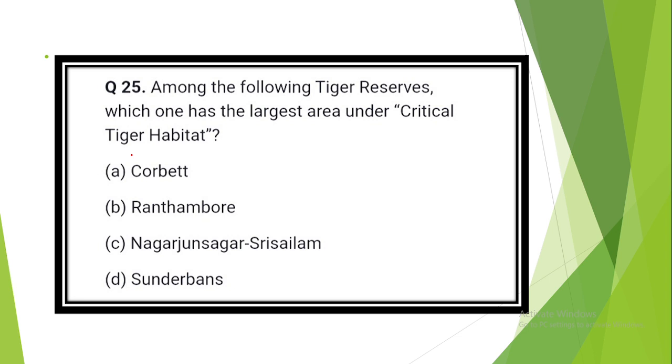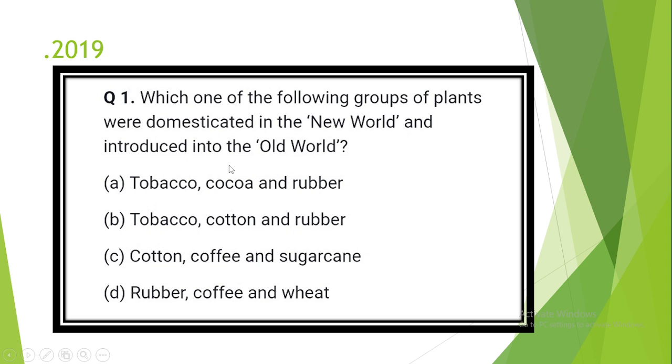Question number 25 and last question. Among the following tiger reserves, which one has the largest area under critical tiger habitat? The answer is option C: Nagarjuna Sagar Srisailam in Andhra Pradesh. Next is 2019 UPSC preliminary questions related to environment. Question number 1. Which one of the following groups of plants were domesticated in the new world and introduced into the old world? Option A: Tobacco, cocoa and rubber.